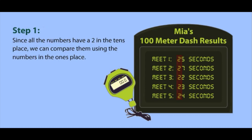Since all the numbers have a 2 in the tens place, we can compare them using the numbers in the ones place. So we really have 7, 5, 2, 3, 4. That's easy.